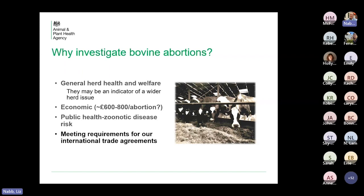So why do we investigate them? There are lots of really good reasons for investigating bovine abortion. It's a general indicator of the health and welfare of the herd. This might not be a one-off event — this might actually be a signal that you've got a more general disease, BVD for instance, or perhaps some salmonella. And as such, it could be particularly costly to the farmer. It's actually really difficult to get an estimate of how much abortion costs, and there aren't any up-to-date estimates in the literature — there's sort of £600 for dairy, £800 for a suckler, but it's likely to be significantly more depending on the circumstances.